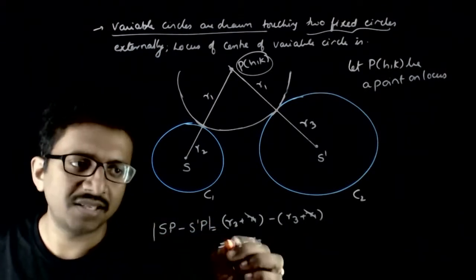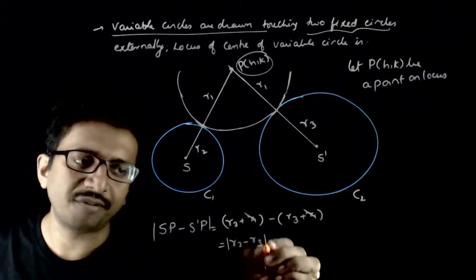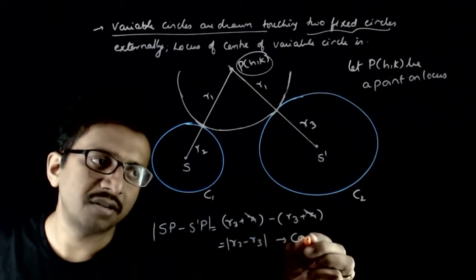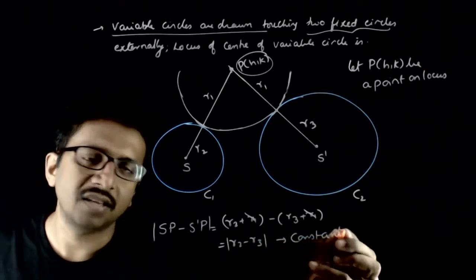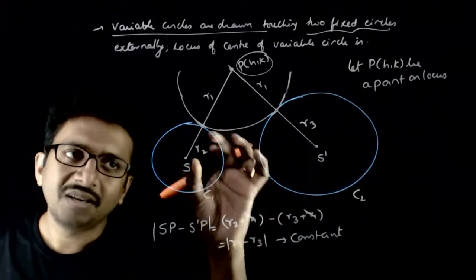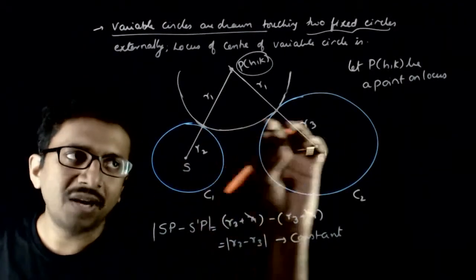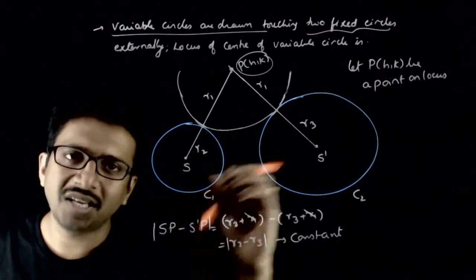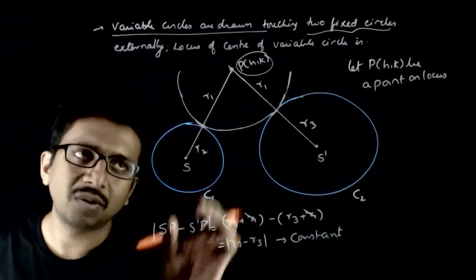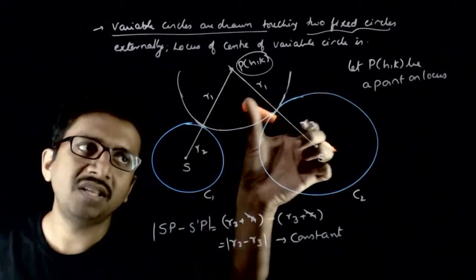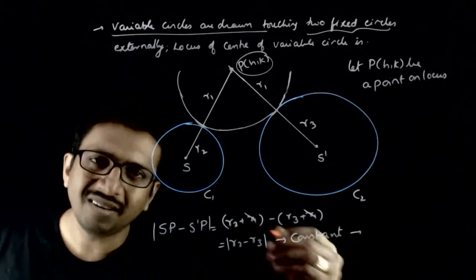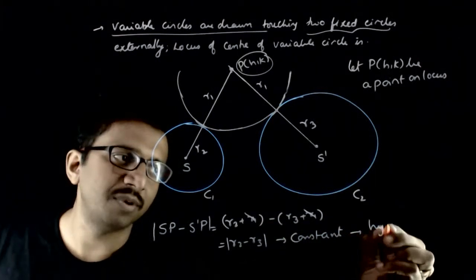The mod of SP minus S'P equals mod of r2 minus r3, which is a constant. This is because r2 and r3 are the radii of fixed circles — they are not changing. So r2 is constant and r3 is constant, meaning the difference between these two distances is constant, which is the basic definition of a hyperbola.